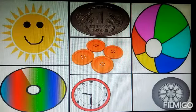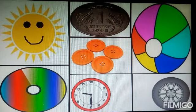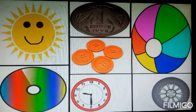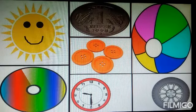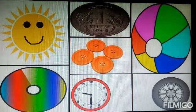Children, the objects in circle shape are sun, CD, coin, buttons, clock, board, and wheel.